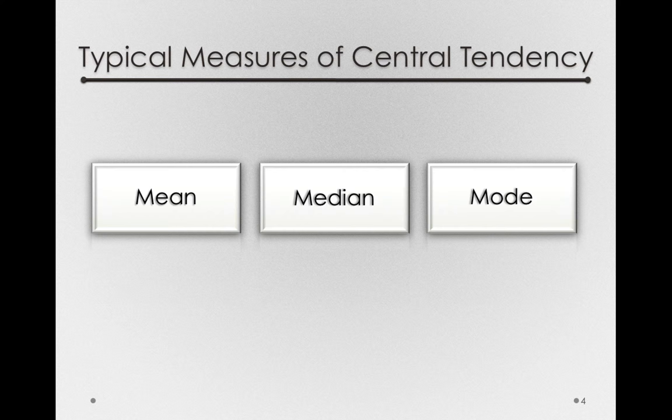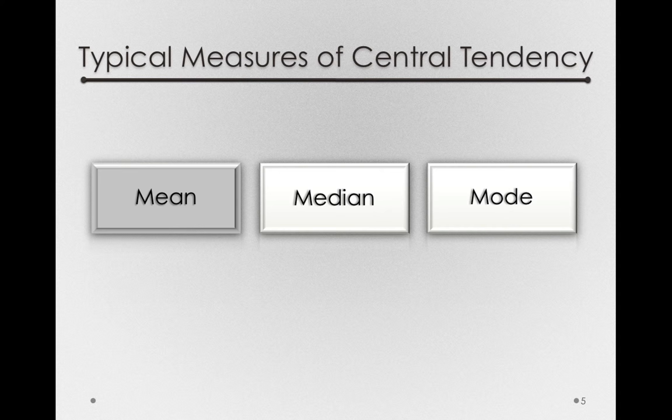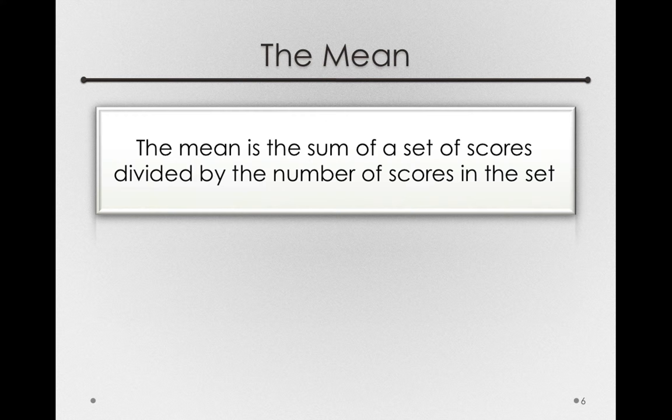Now we're going to spend most of our time talking about the mean, although we will talk about situations in which the median and mode do provide nice and useful measures of central tendency, especially when we have heavily skewed data or data that is misbehaving in some other way. But starting with the mean, let's start with a definition in words of what the mean represents, and then we'll move on to how we would write this out in a formula. Now the mean is just the sum of a set of scores divided by the number of scores in the set.